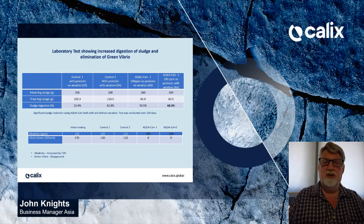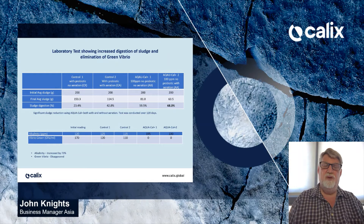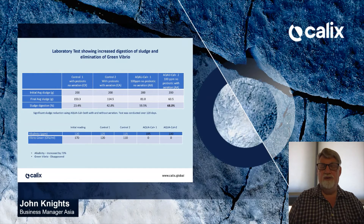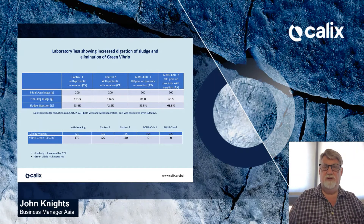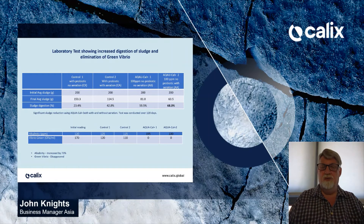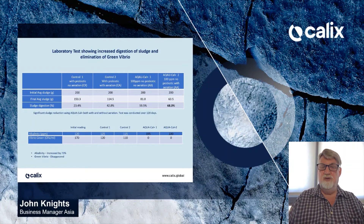We did a series of laboratory tests looking at sludge digestion and green Vibrio. These were done in a laboratory in Malaysia. We took a control with probiotic and no aeration, a second control with probiotic and aeration, and AquaCal with aeration. The sludge digestion results are quite significantly different. The first control with no aeration showed 23.4% sludge digestion. The control with aeration was better at 42.8%. However, with AquaCal, digestion reached 59.5% without aeration and 68.3% with aeration. This test was done over 120 days, showing significantly more digestion using AquaCal.